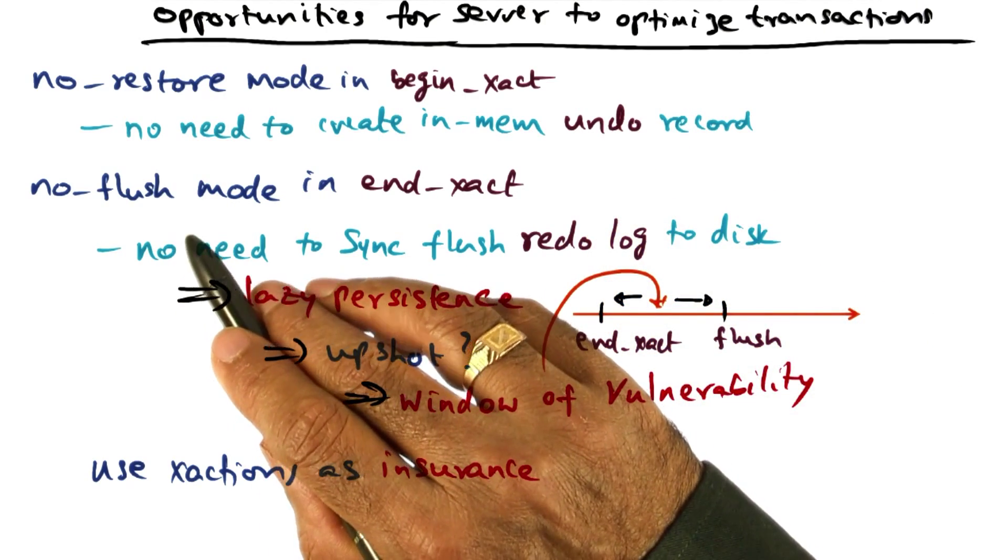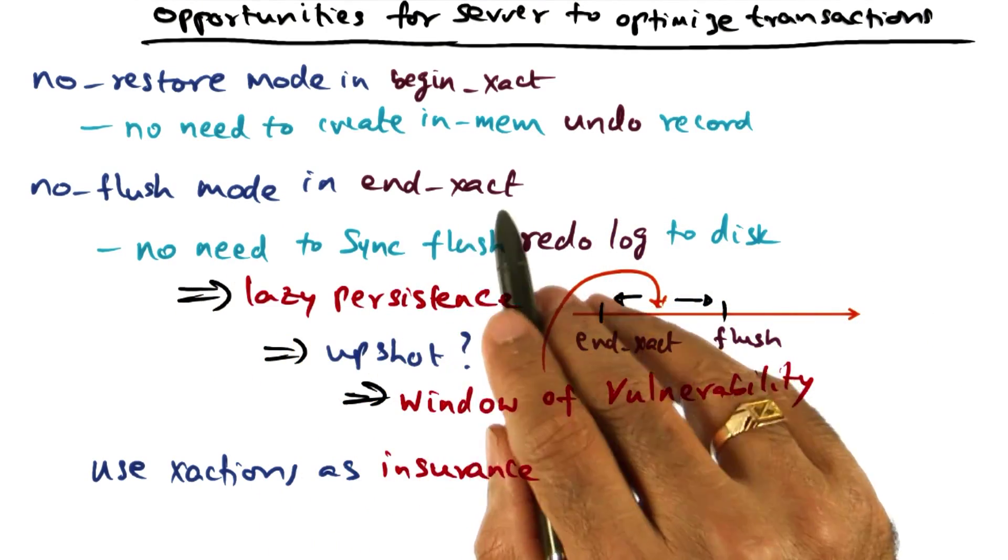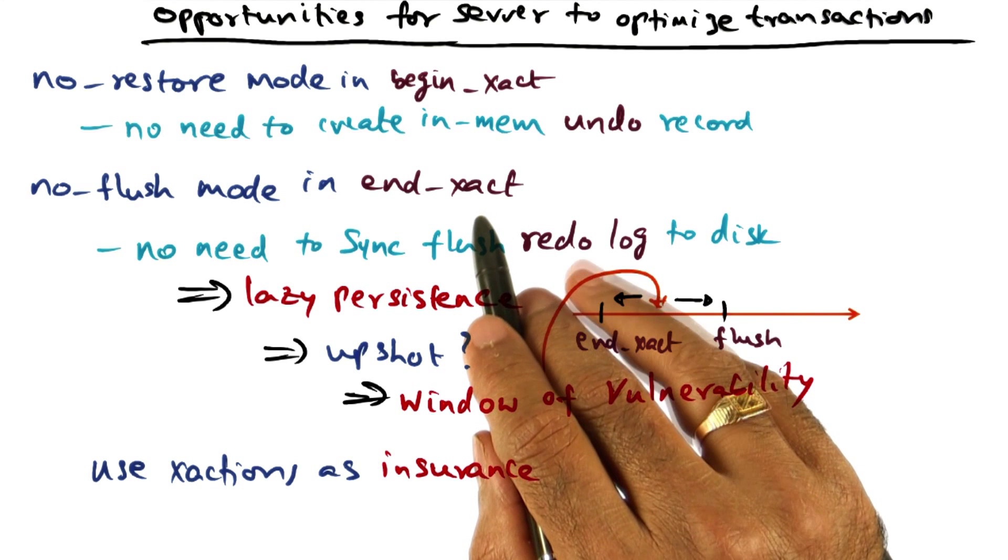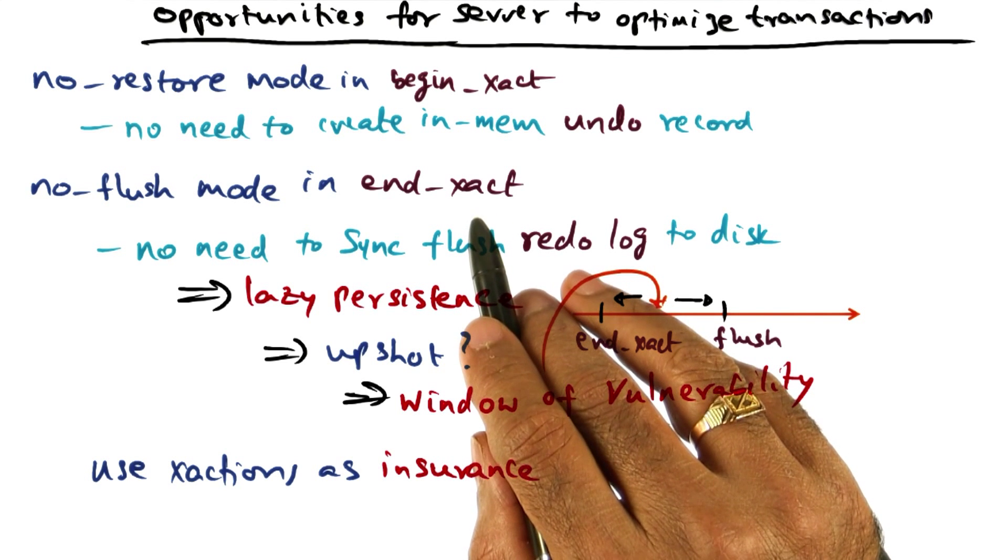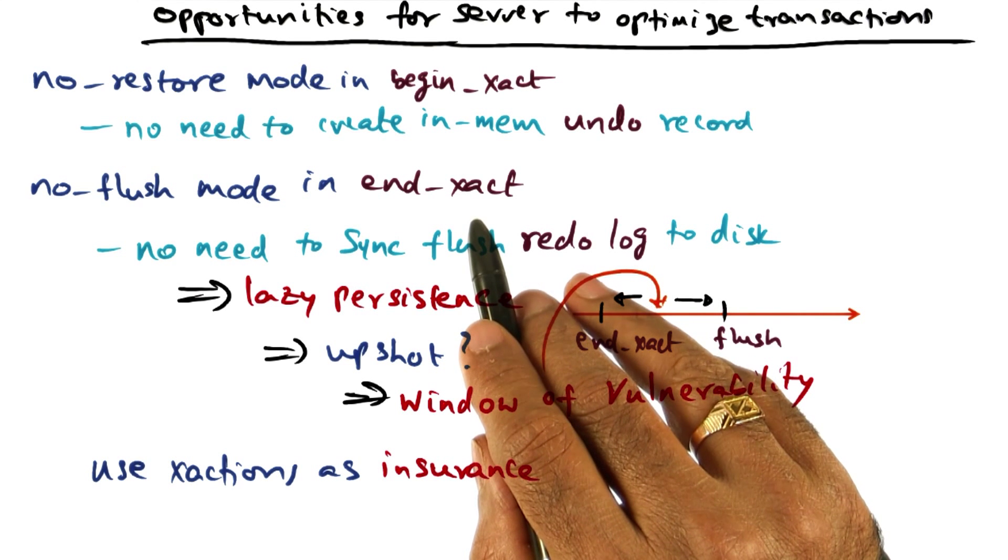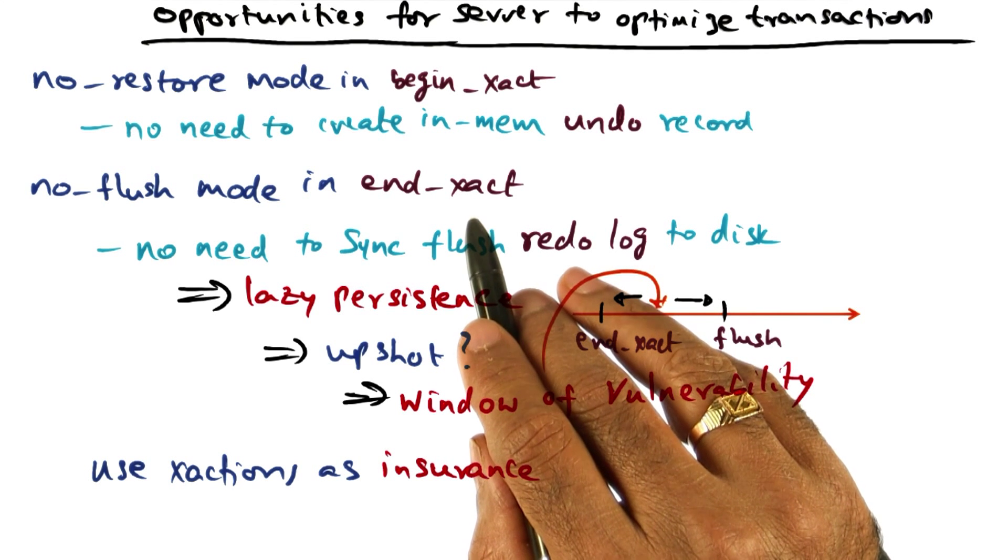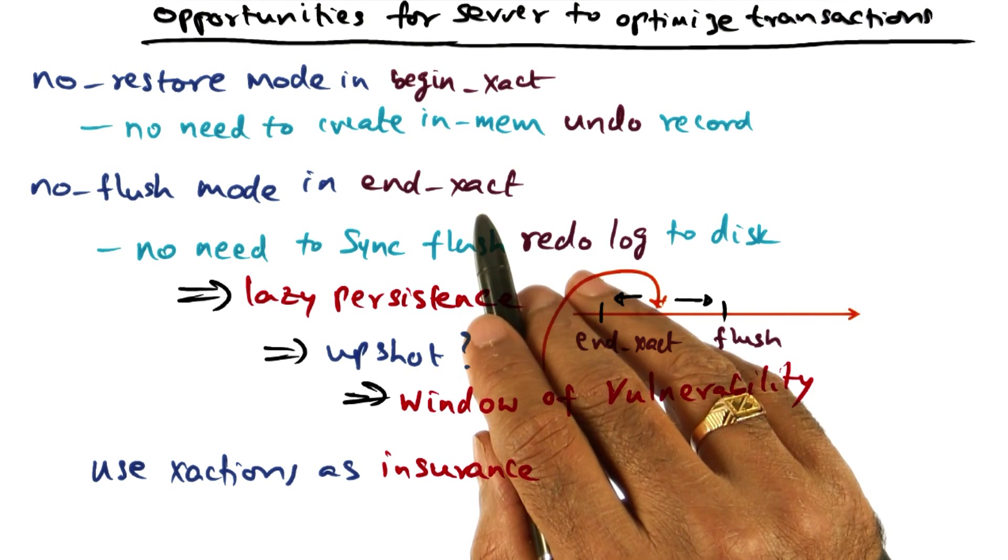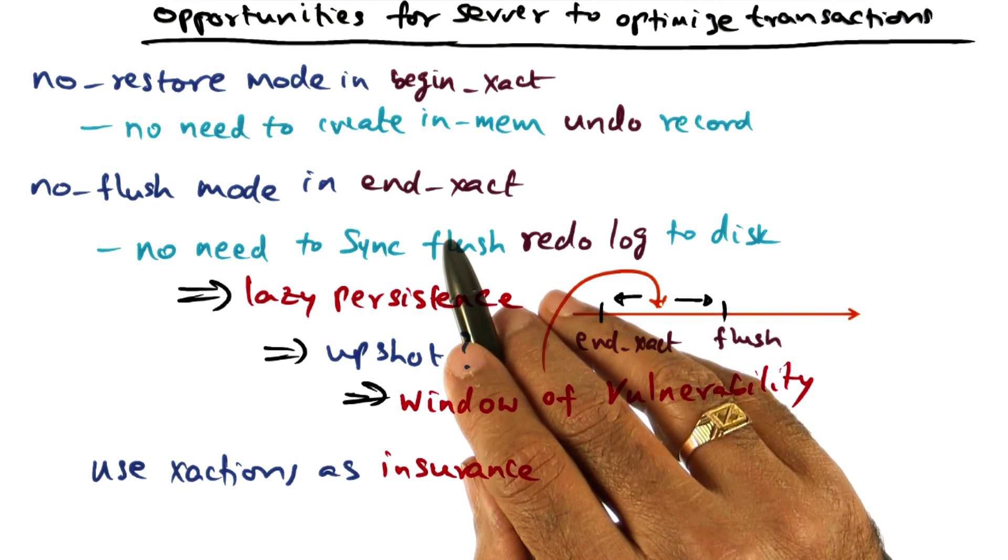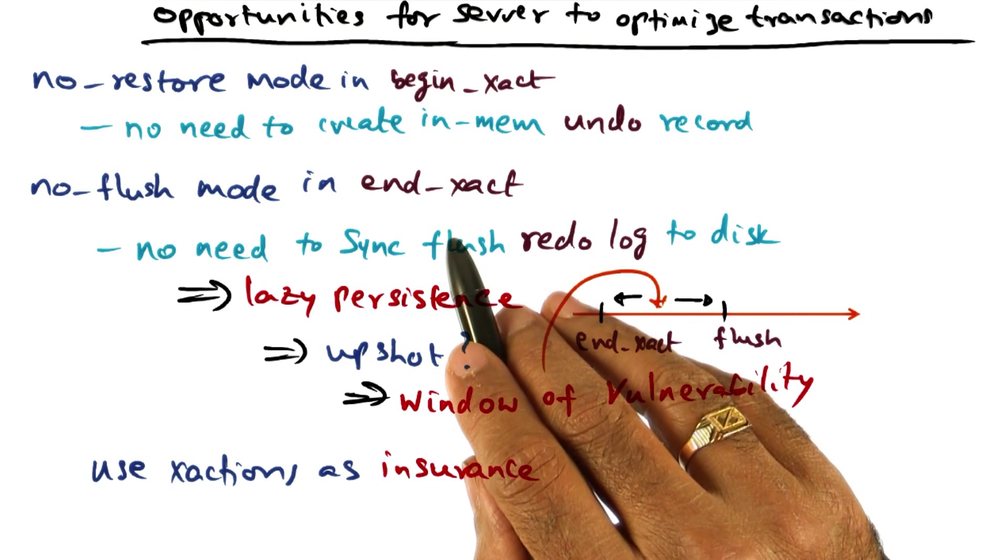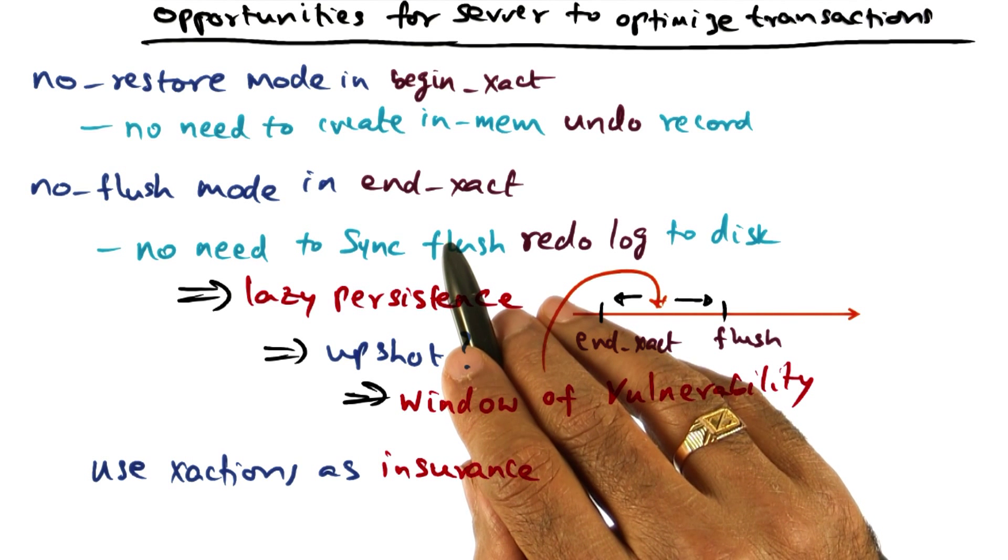The second optimization opportunity is the no flush mode in the end transaction. As I mentioned, a transaction truly has committed only when the changes to the critical section between begin transaction and end transaction have been synchronously written out to the disk.